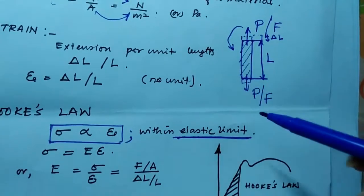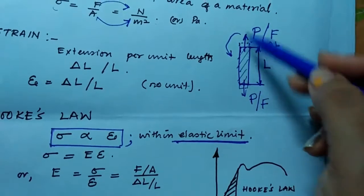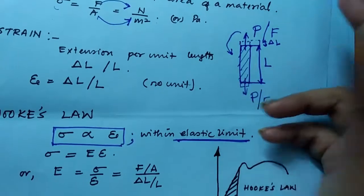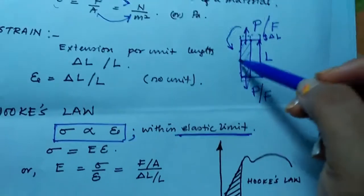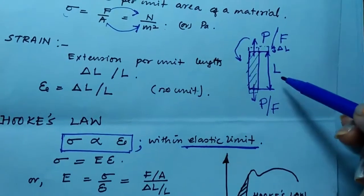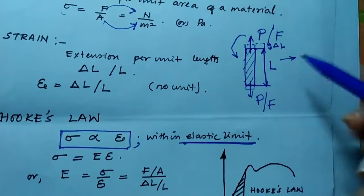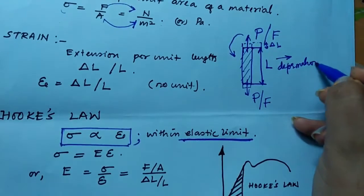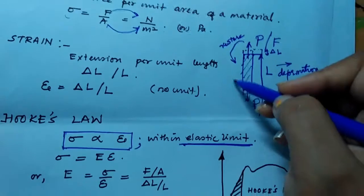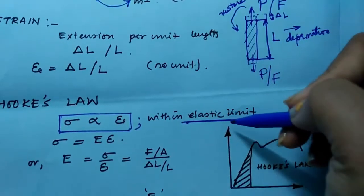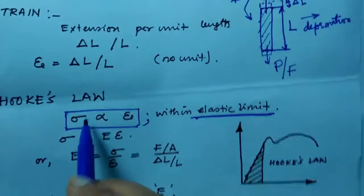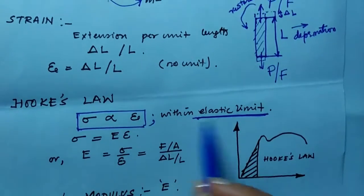As we keep on applying force on both sides, extending the bar, there will be some change in length. After we release the load, if the material doesn't have the capacity to come back to its original position or dimension, that means it has undergone deformation. But when it has the capability to restore and regain its original position and dimension, that is within the elastic limit — that is elastic nature.